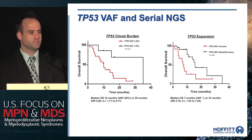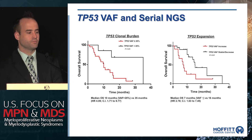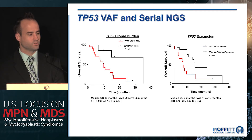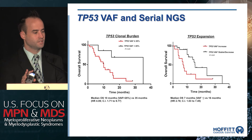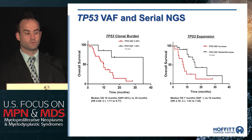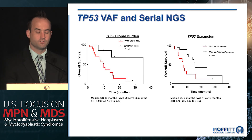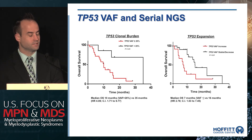p53 is tightly concordant with the clinical trajectory of patients: if the clone increases, patients do worse; if the clone decreases, they can do well. Patients with an allele burden consistently less than 20% had a median survival of 35 months versus only 10 months for those whose VAF exceeded 20% at any point. If the p53 clone expands at any time, survival is cut roughly in half, and this is statistically significant and independent of treatment and clinical prognostic models in multivariable analysis.